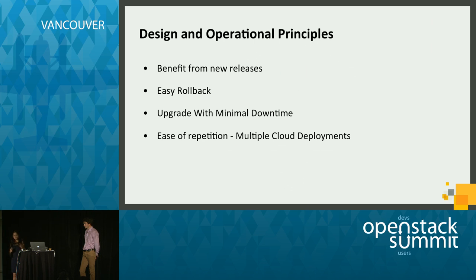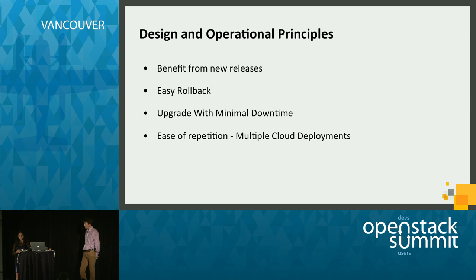Once we upgrade our OpenStack cloud to Icehouse, if things go wrong, is there an easy rollback? Can we roll it back to Havana and have things move smoothly? Next, how can we upgrade with minimal downtime and very minimal impact on our customers? And we have multiple OpenStack instances running, multiple OpenStack clouds — so how do we apply this upgrade to all of our environments with automation?